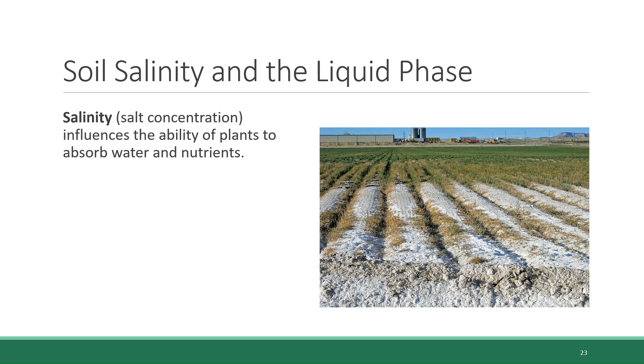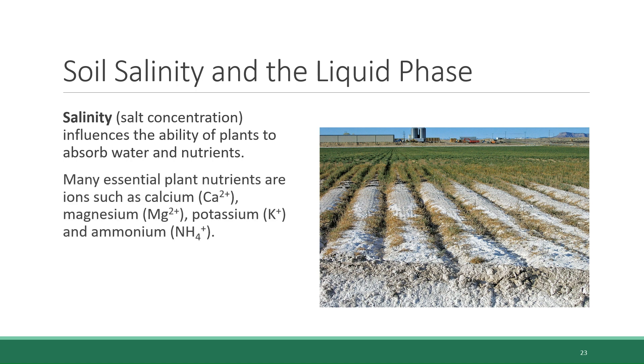While we are on the topic of liquid in soils, one factor that is important to discuss is soil salinity. Salinity is the technical term for salt concentration. And the salt concentration found in a soil has an influence on how well the plants grow in that soil and can absorb water and nutrients. In particular, soils with very high salinity, such as the one that you see in the image here, where the salinity is so high that a salt crust is developed over it. These types of soils are characterized by poor nutrient uptake by the plants that live in them. So why does salt have this effect?